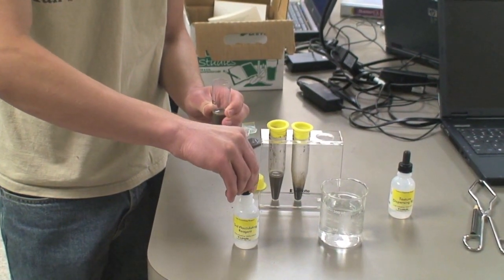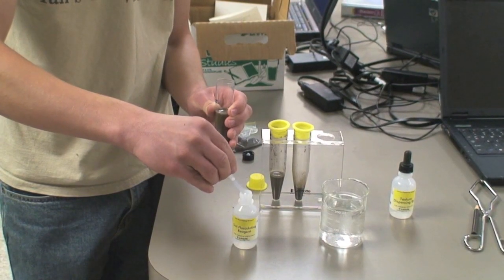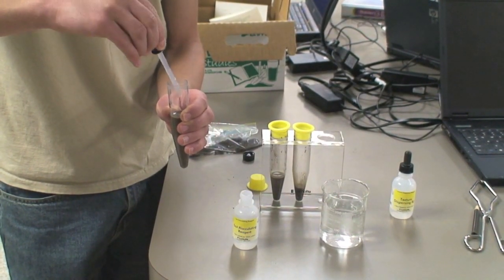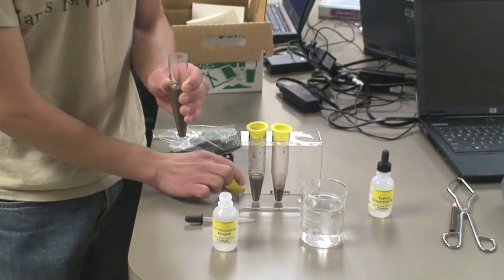If you are going to use the clay portion from the soil for further testing, add one milliliter of soil flocculating reagent to the last tube, cap it, shake it, and let it sit overnight.